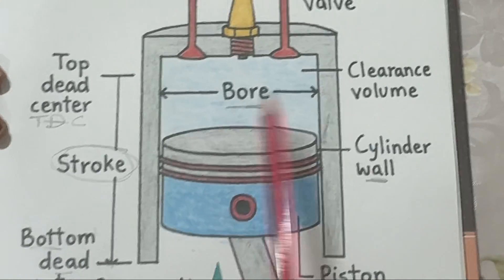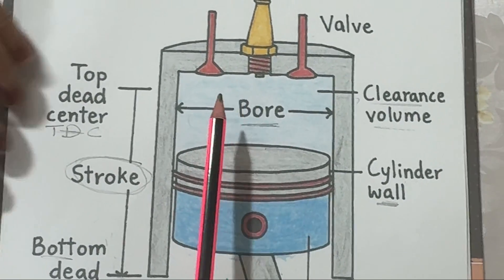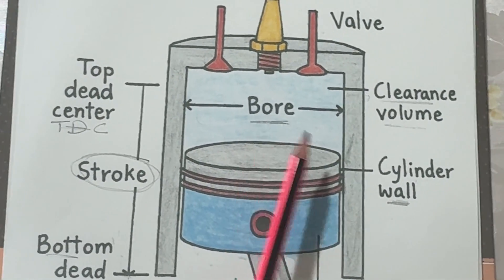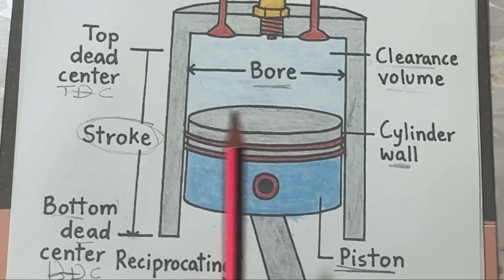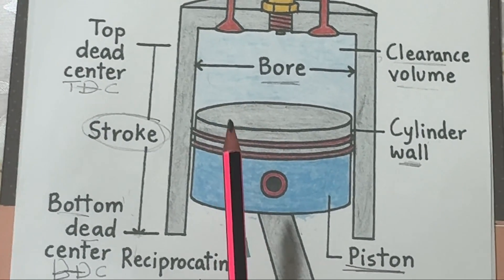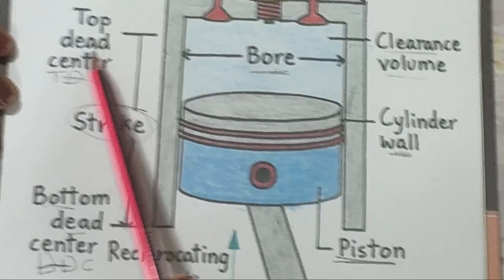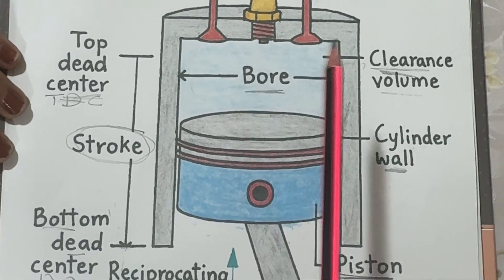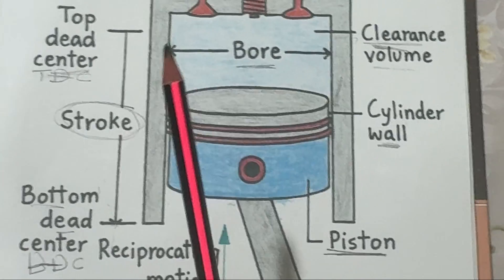The bore is the diameter of the cylinder — basically how wide the piston is. A bigger bore means a larger cylinder and usually more power, since more air-fuel mixture can fit inside. The small space left between the piston top and the cylinder head, even when the piston is at top dead center, is called the clearance volume. This space ensures there is always enough room for the fuel mixture to compress safely before ignition.